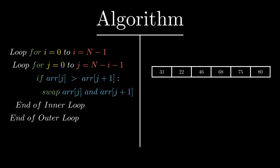We will start with the third pass. In pass 3, the value of i will be 2 and the range of the inner loop will be from 0 up to 3. We compare 31 and 22 — 31 is greater than 22, so we swap. Then we compare 31 and 46 — 31 is less than 46, so we don't swap. Then we compare 46 and 68 — 46 is less than 68, so again we don't swap. We are done with pass 3.